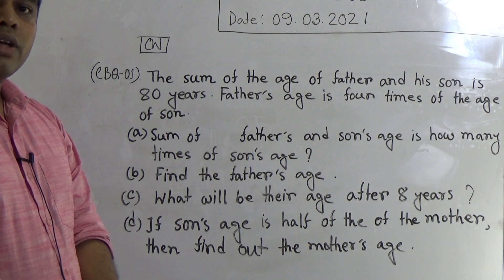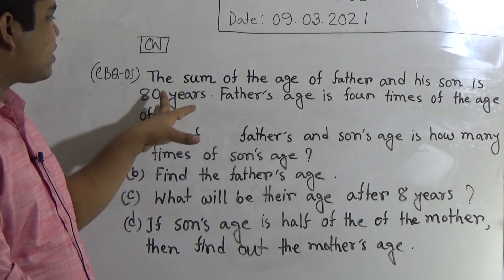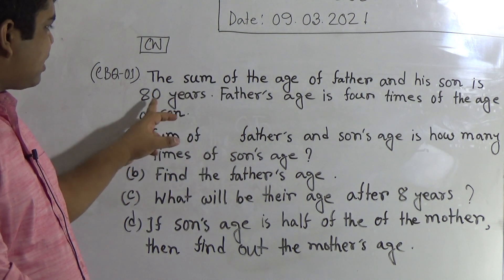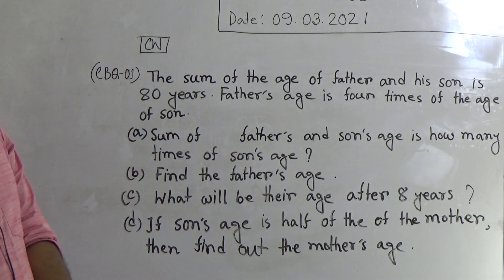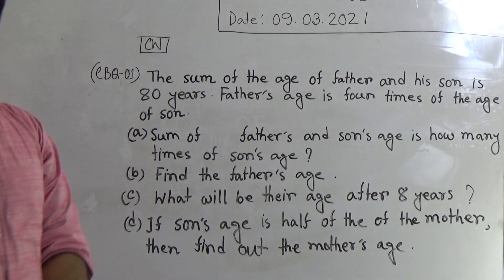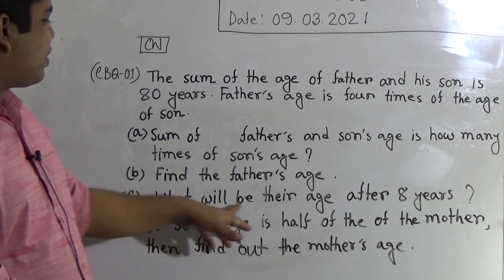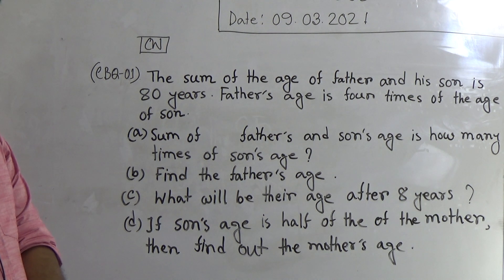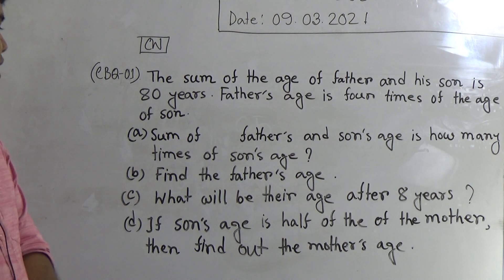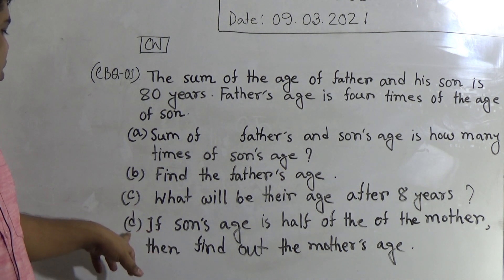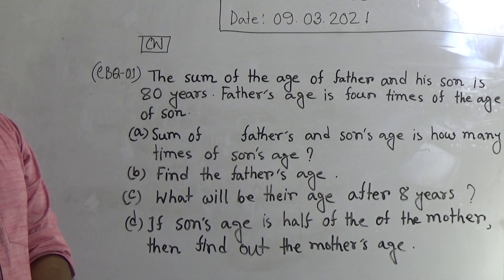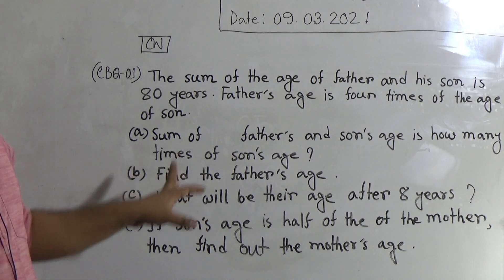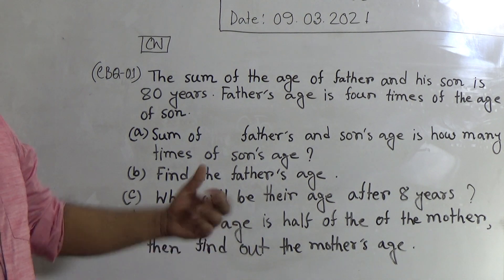For question B, we need to find the father's age. The total age of father and son is 80 years, and their total age is 5 times the son's age. If we divide 80 by 5, we get the age of the son. Then, since father's age is 4 times the son's age, we multiply the son's age by 4 to get the father's age. For question C, from question B we find the son's age, then add 8 to each age separately to get their ages after 8 years. For question D, since son's age is half the mother's age, the mother's age is 2 times the son's age — multiply the son's age by 2 to get the mother's age.